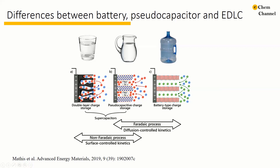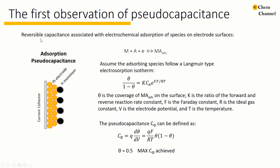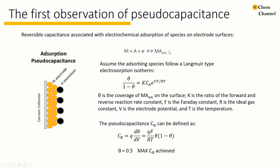In one sentence: surface redox and some ion insertion reactions have been termed pseudocapacitive because their thermodynamic behavior can be described with the same mathematical models as those for surface adsorption and desorption. In 1962, Conway and his colleague first used the concept of pseudocapacitance to describe the reversible capacitance associated with the electrochemical adsorption of species on electrode surfaces.